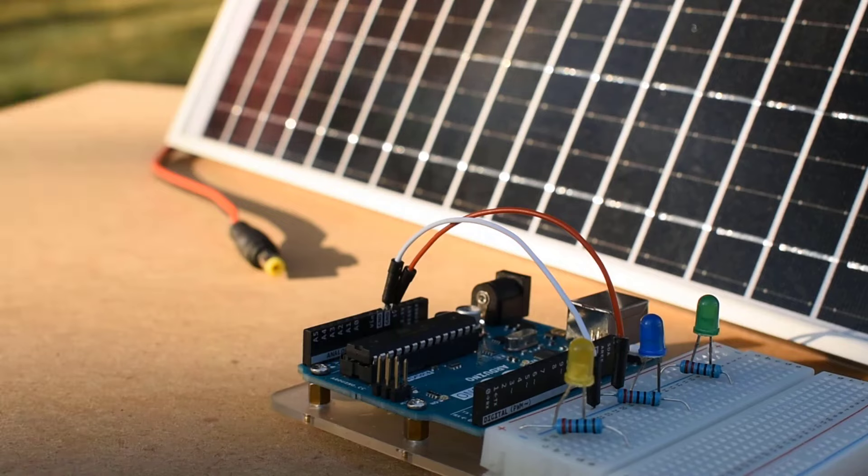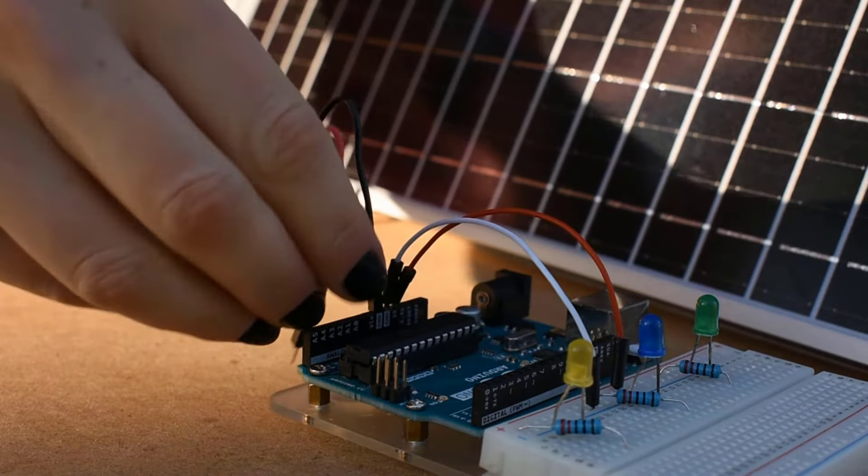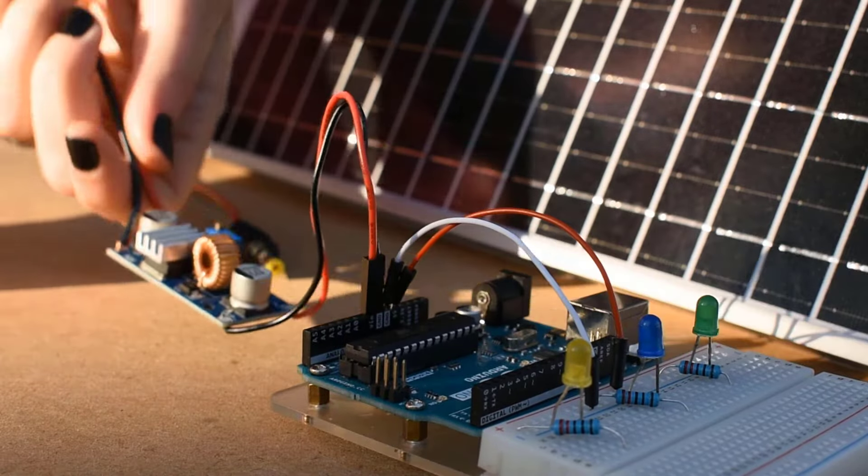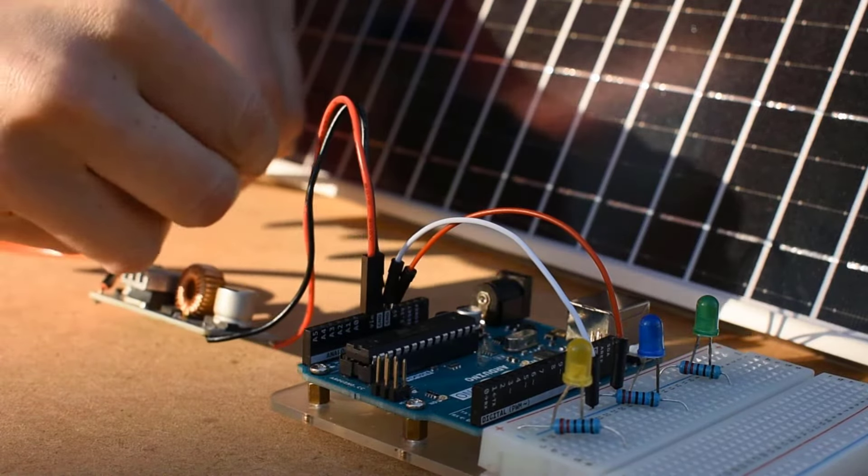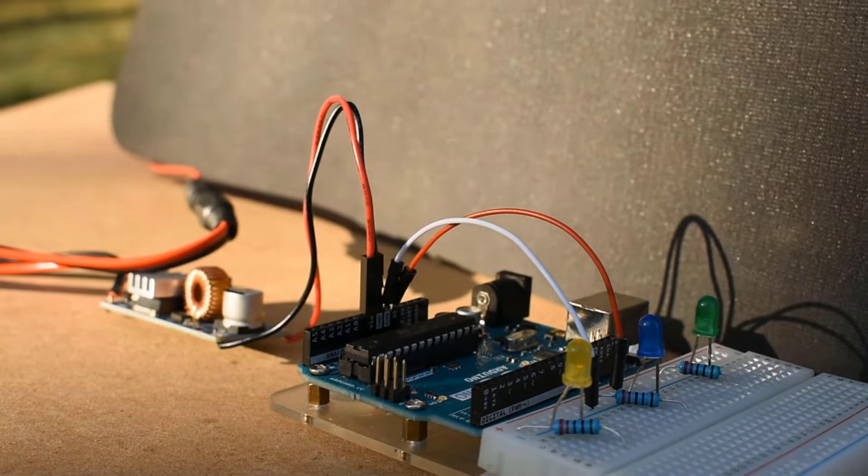An easy way to regulate voltage is using a buck converter. If I add one into this circuit, the Arduino receives a steady voltage. It works! Well, until it doesn't. The solution, of course, is to add a battery.